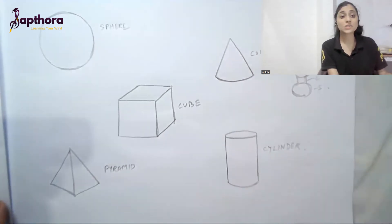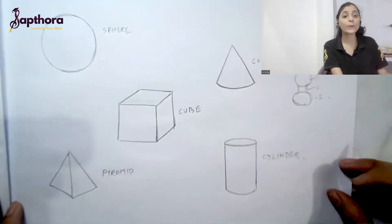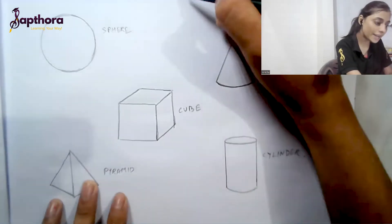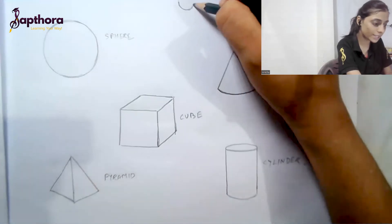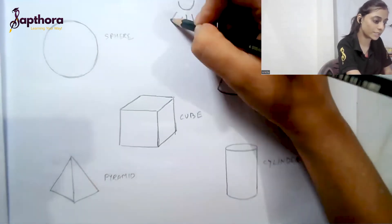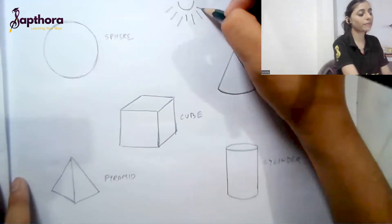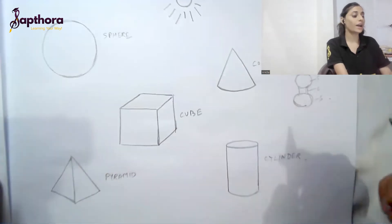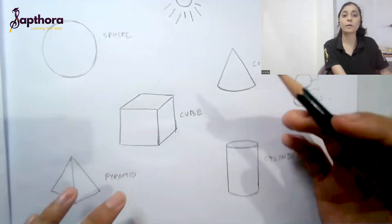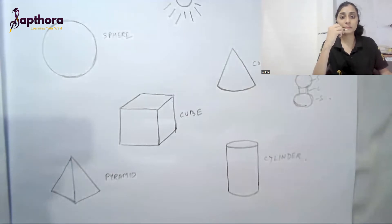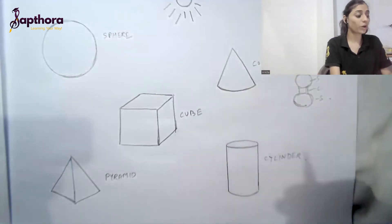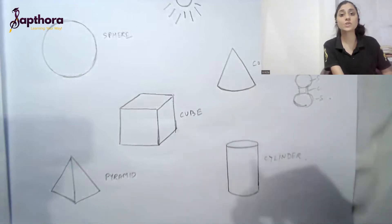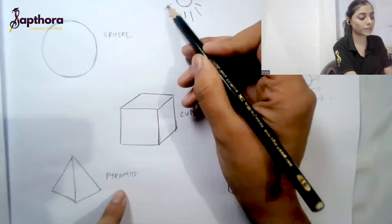Once you are done, since we are discussing light and shadow, it's important to know the source of light. Decide a source of light — let's consider the light is coming from this side. The stroke of your pencil matters for each shape; you cannot use the same stroke for all of them.